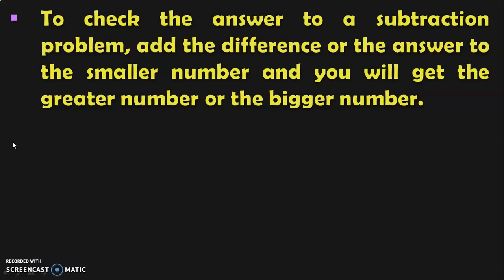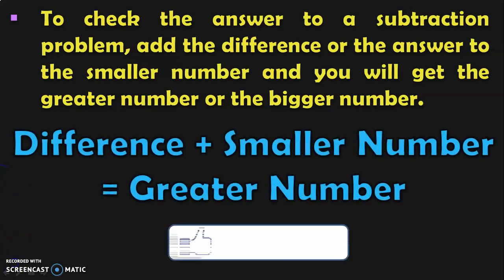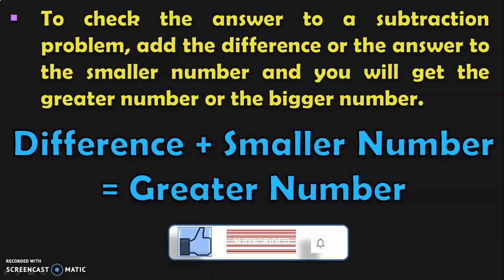To check the answer to a subtraction problem, add the difference or the answer to the smaller number and you will get the greater number or the bigger number. This means that difference plus smaller number will give you the greater number. Let us see with examples and understand how we are going to do this.